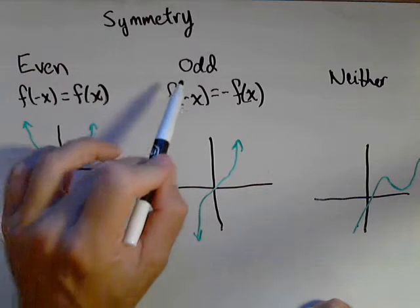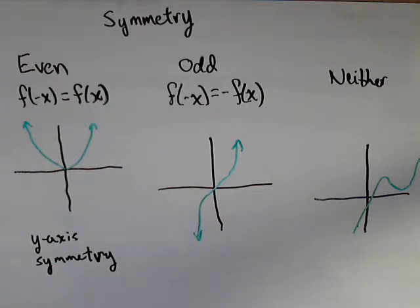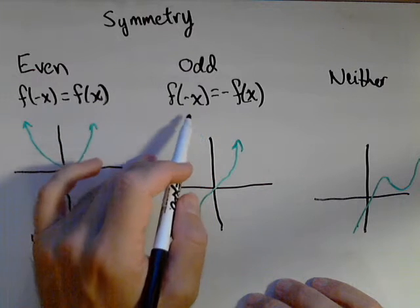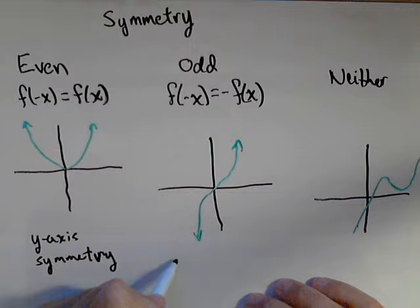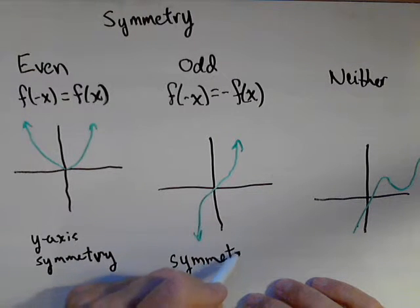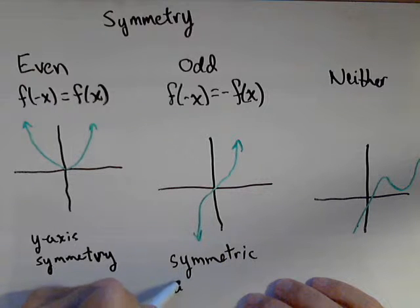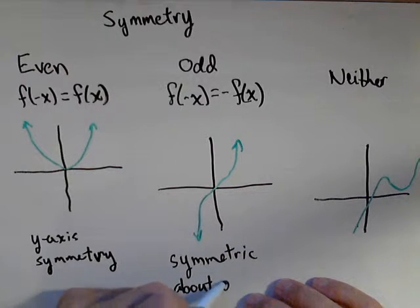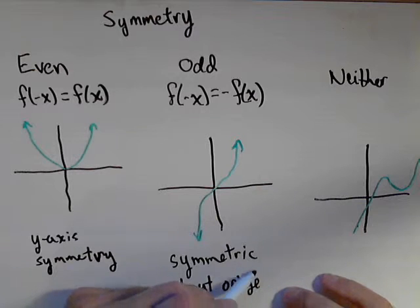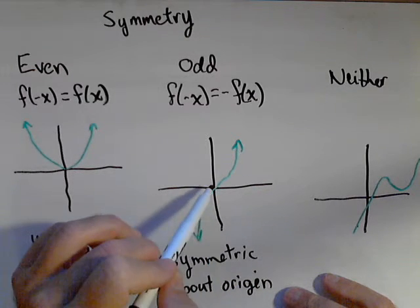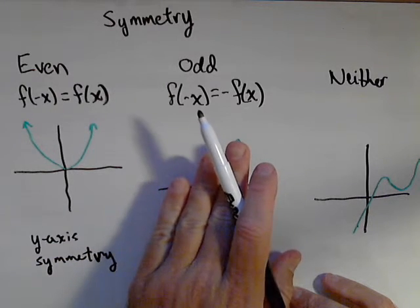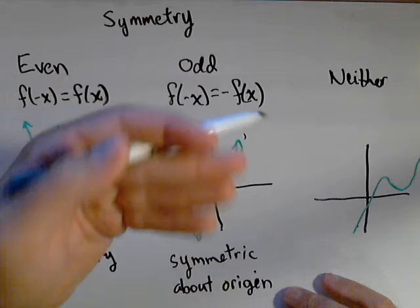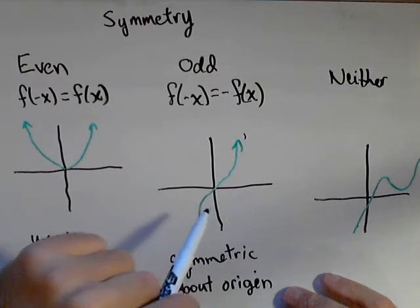The next type of symmetry is for odd functions, where f of negative x equals negative f of x. Changing the sign on the input changes the sign on the output. This gives us a graph that's symmetric about the origin, the point (0, 0). x cubed is a good example. What's going on up here is going on down here. If we flip the graph over the y-axis and then the x-axis, we get the same graph.